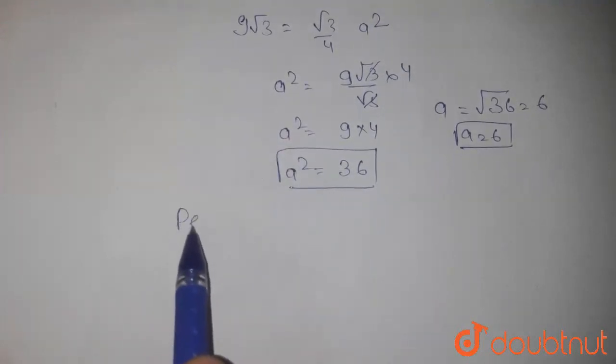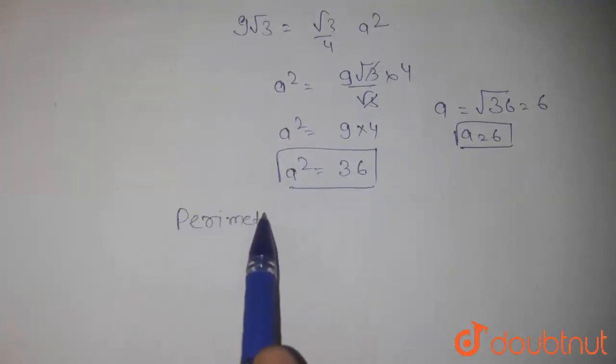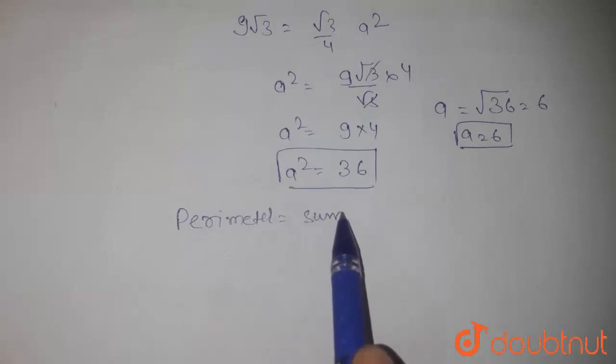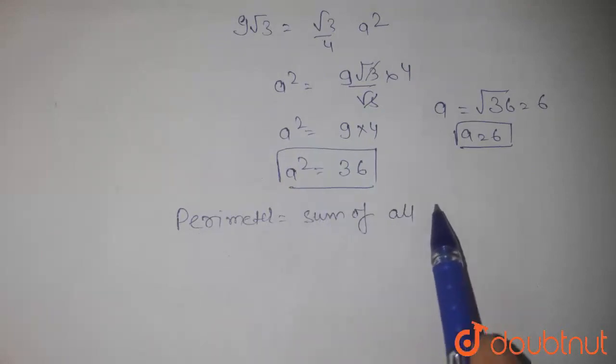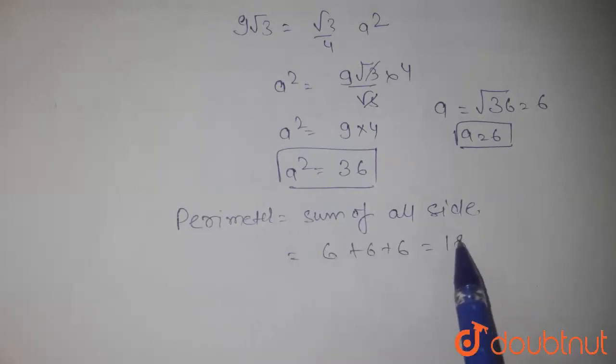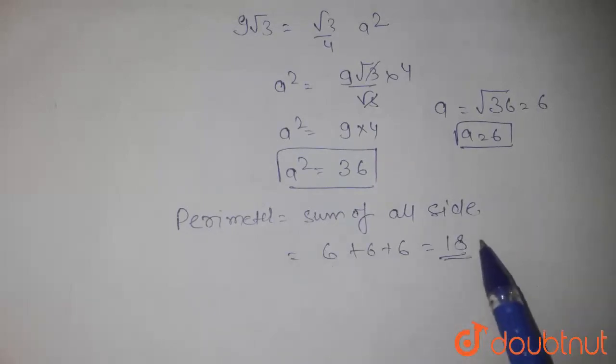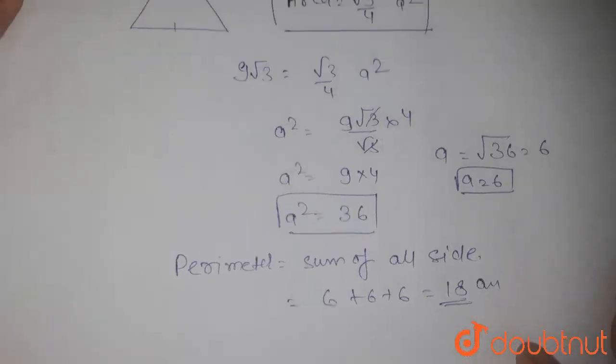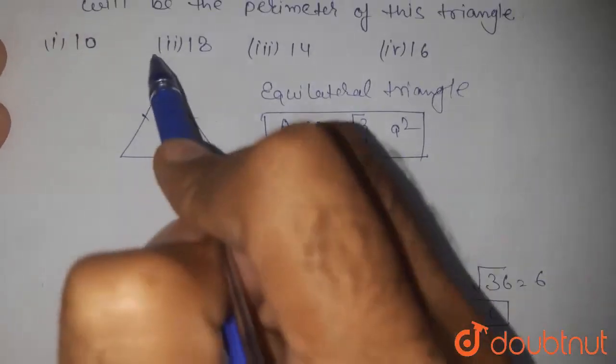Now we need to find the perimeter. Perimeter equals sum of all sides. It will be 6 plus 6 plus 6 equal to 18. 18 is the right answer, 18 centimeter. In the options, option number 2 is the right answer.